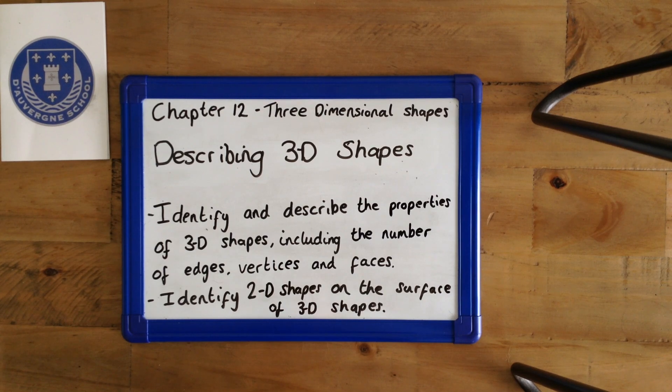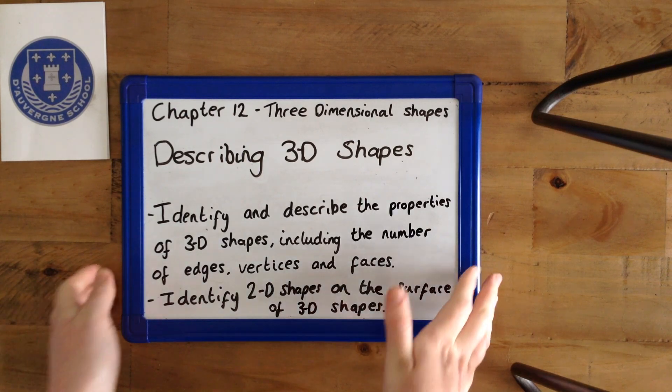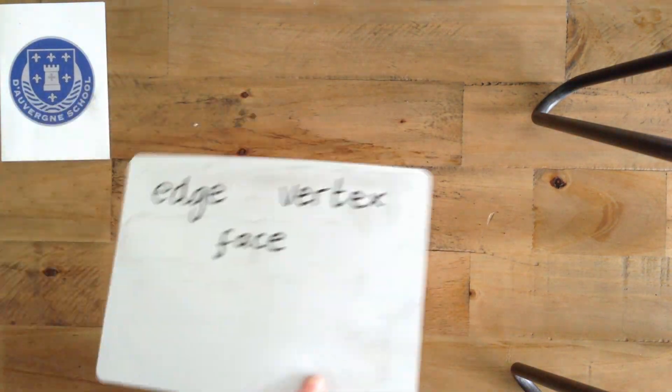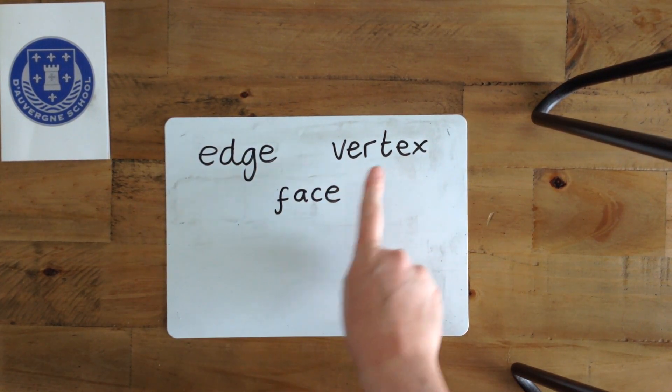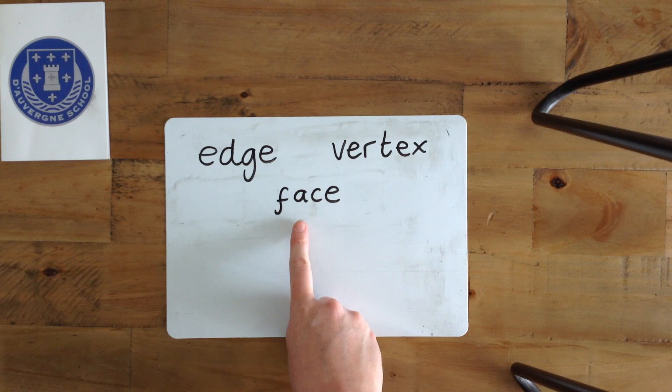Hi Doverne, today we're continuing with Chapter 12 on 3D shapes, and we're describing 3D shapes today. These are the key words we're going to be using: edge, vertex, and face.